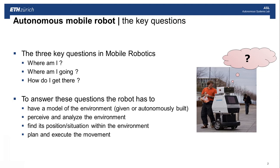Let us directly start with the problem a mobile robot is facing while navigating in its environment. In order to freely operate in its environment, mobile robots have to address three main questions. First, they have to know where they are — where am I? The second question is, where am I going? And the last question is, how do I get there? These are fundamental questions for navigation, which are also the same questions humans or animals have to ask in daily life.